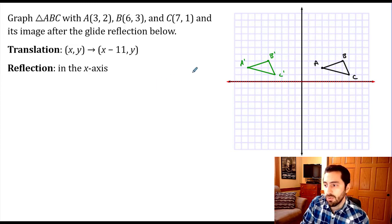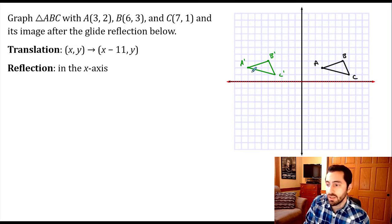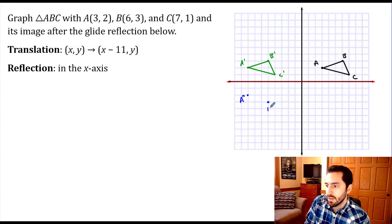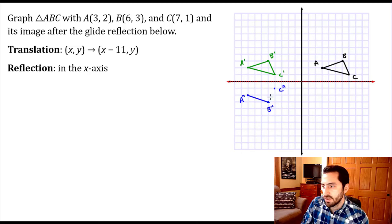Now we perform the reflection to complete the glide reflection — we flip over the x-axis. I just need to move vertically and make sure I'm the same distance away on the other side. A prime is 2 units away, so A double prime is 2 units on the other side. B prime is 3 units away, so B double prime is 3 units on the other side. C prime is 1 unit away, so C double prime is 1 unit over.